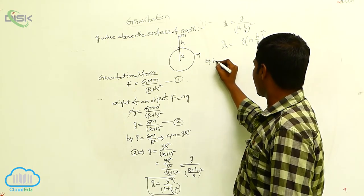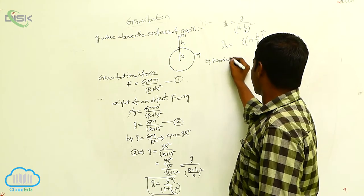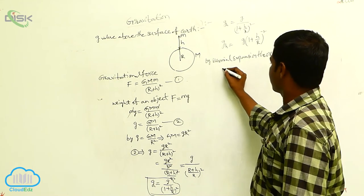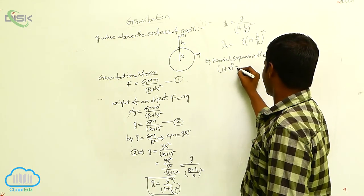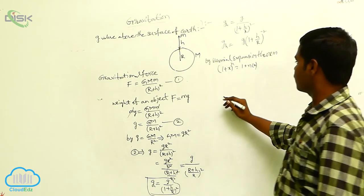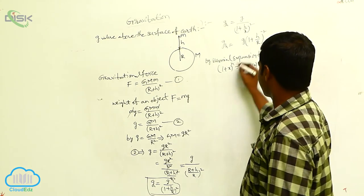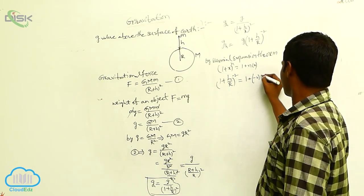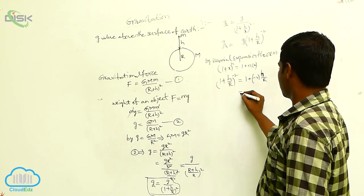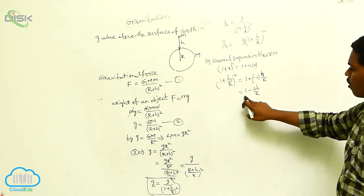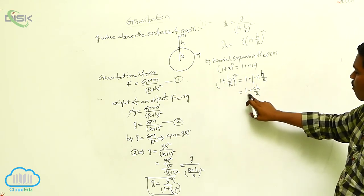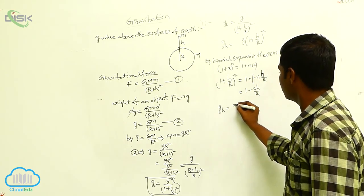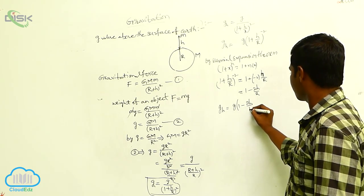By the binomial expansion theorem, (1+h/R)^(−2) = 1 + (−2)(h/R) = 1 − 2h/R. Substituting this, g_h = g(1 − 2h/R).